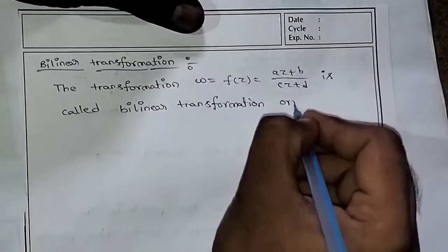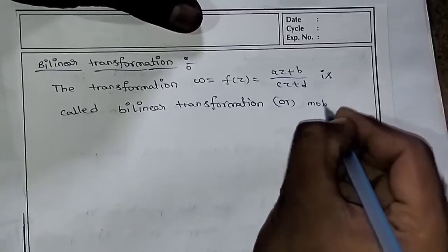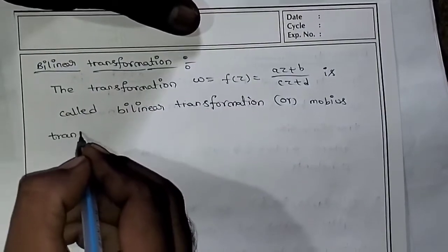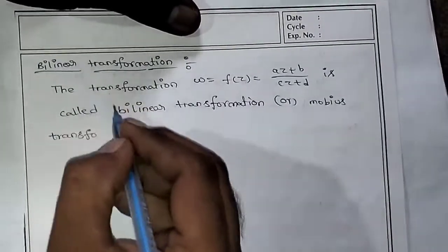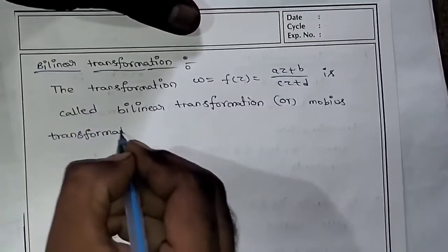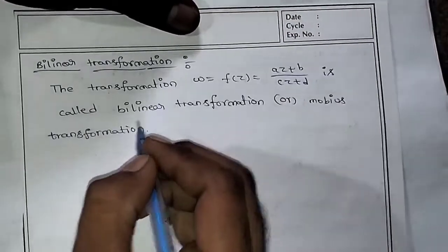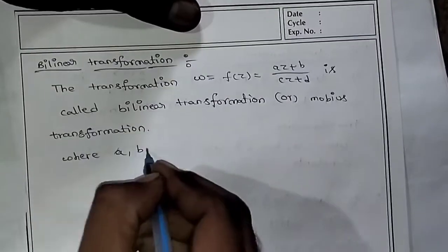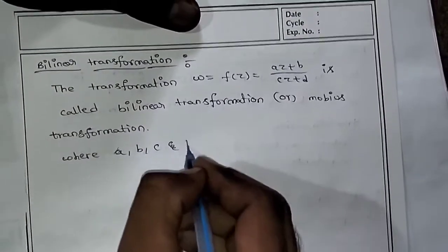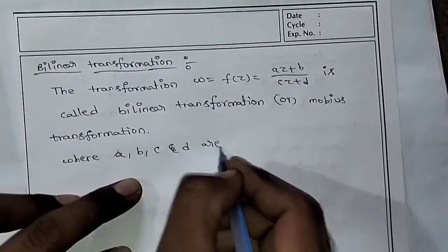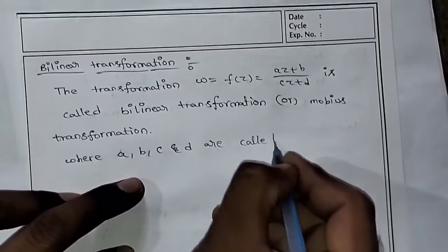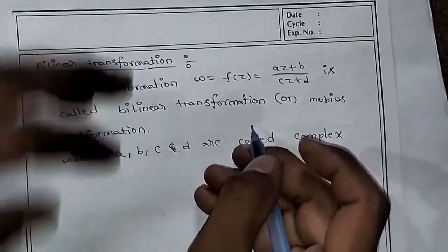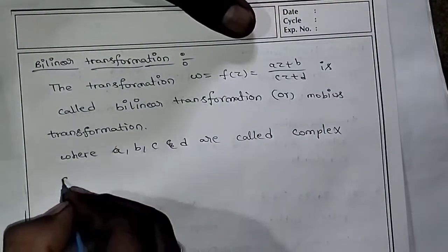Or Möbius Transformation. Where A, B, C, and D are called Complex Constants.